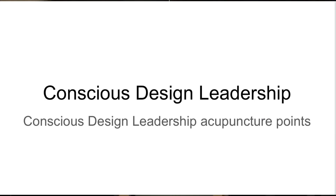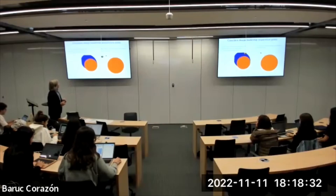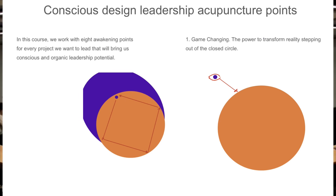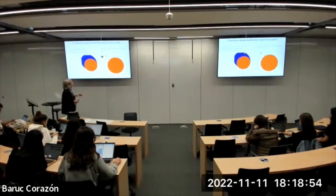Remember these concepts — game changing from the first session: the power to transform reality is stepping out of the closed circle, changing our point of observance. We are observing not from the awareness of the system we are in, but from an outer awareness — a consciousness that is outside the system so we can have the whole perspective of the system.